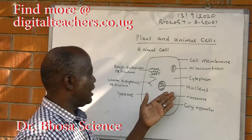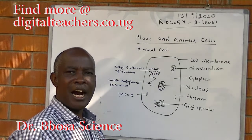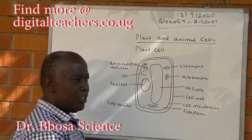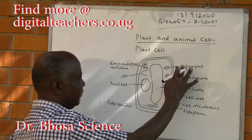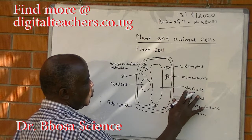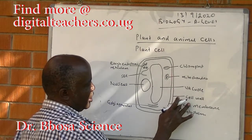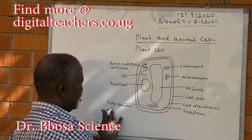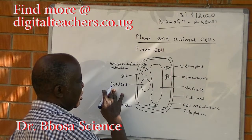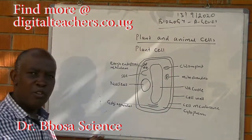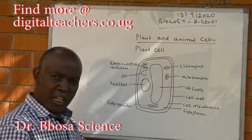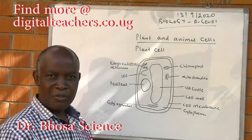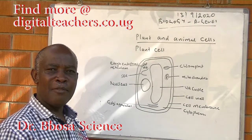We shall look at in detail the function and structure of each of the following parts. Parts of a plant cell include chloroplast, mitochondria, vacuole, cell wall, cell membrane, cytoplasm, nucleus, smooth endoplasmic reticulum, and rough endoplasmic reticulum.